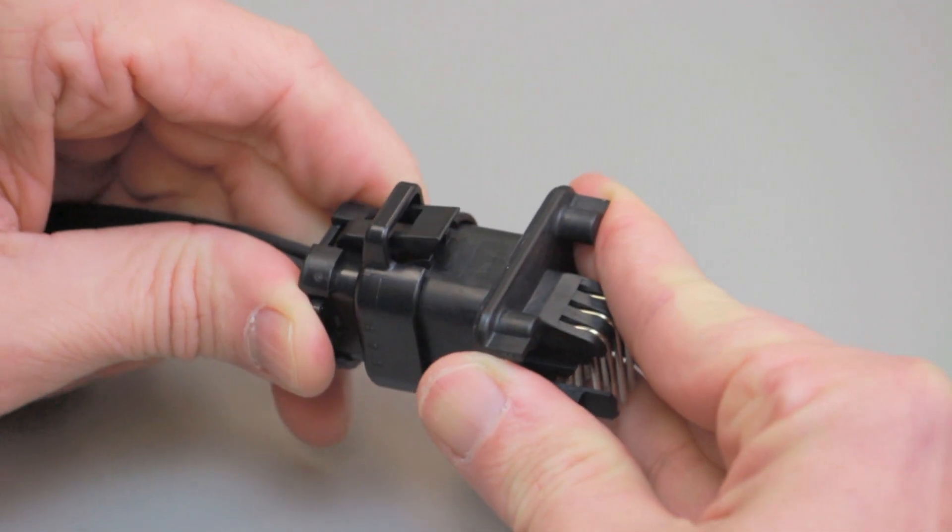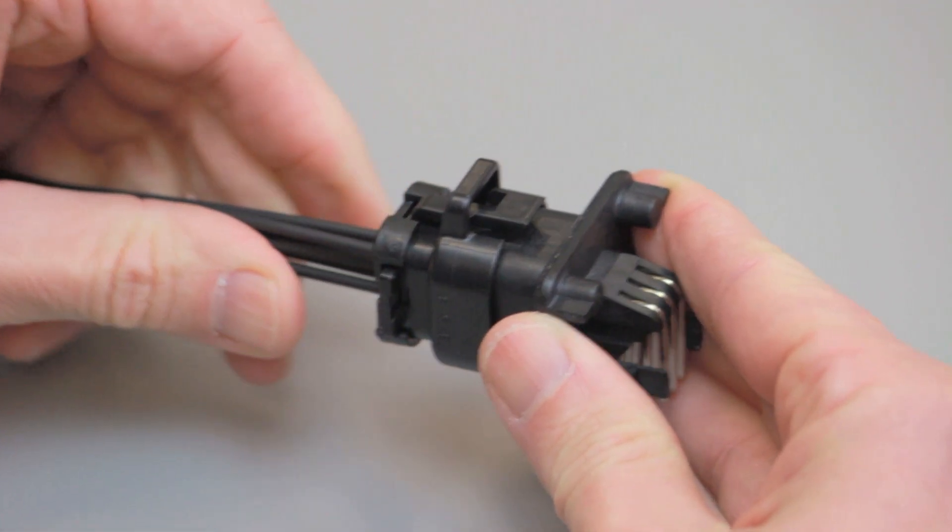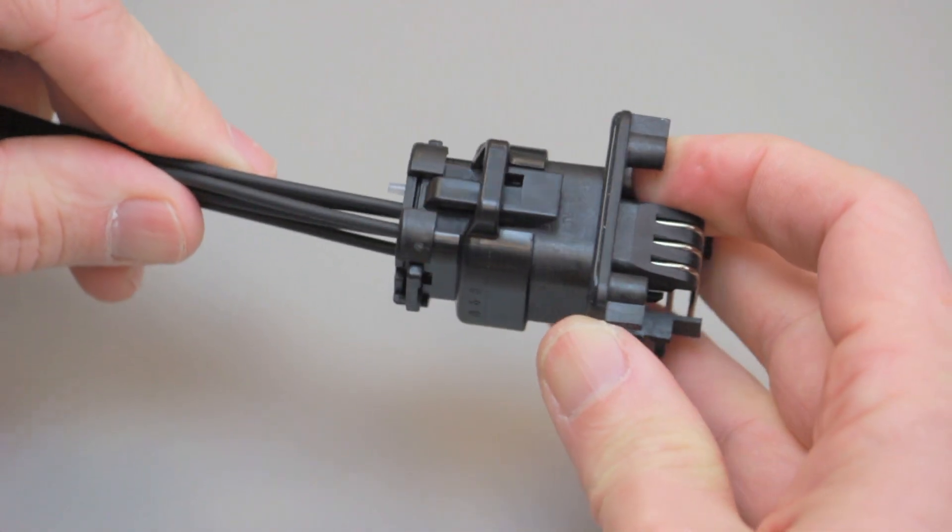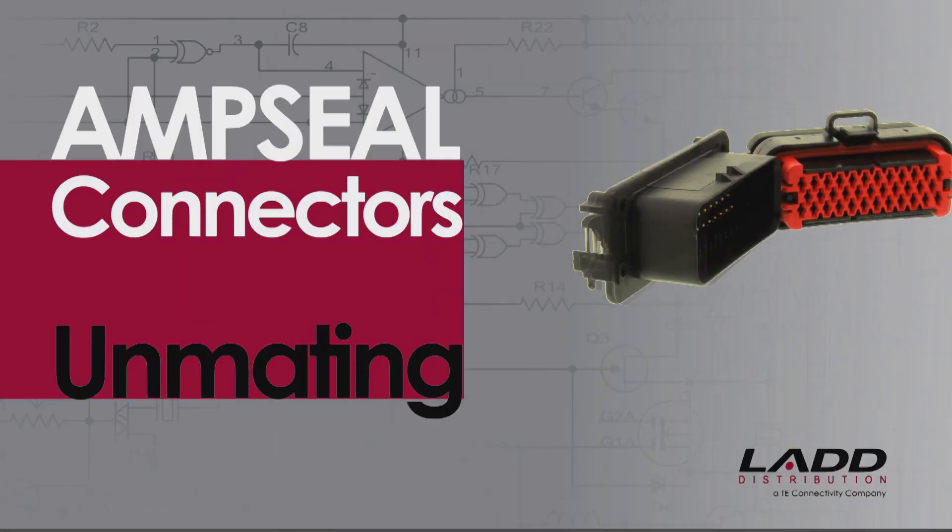Push the receptacle contact housing and PCB header together until you hear and feel a click. Amp seal connector unmating.